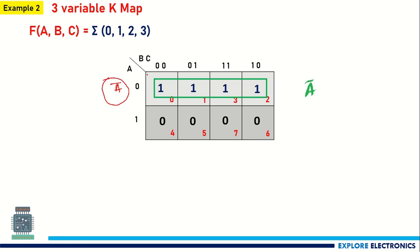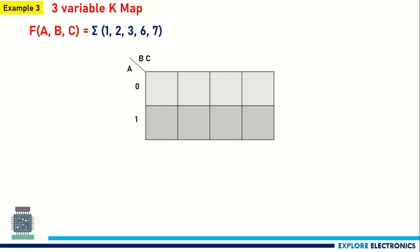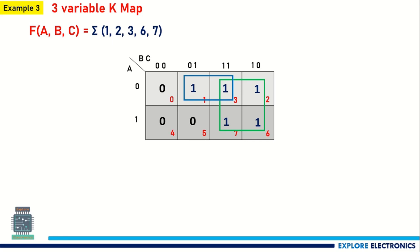Let me take a more complex example. Here we have 1, 2, 3, 6, and 7 as minterms. Again in the K-map, I am taking the same layout with A and BC. I am writing 1 at minterms 1, 2, 3, 6, 7 and remaining with zeros. Now I need to group these by looking at adjacent ones. First, let me group these 4 terms since they are all adjacent to each other, and this one is left out.